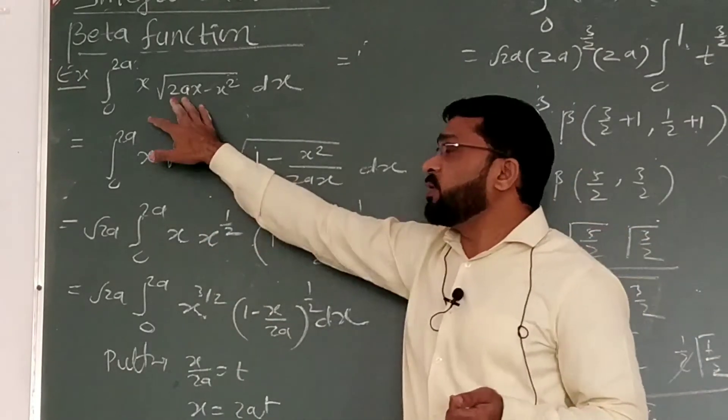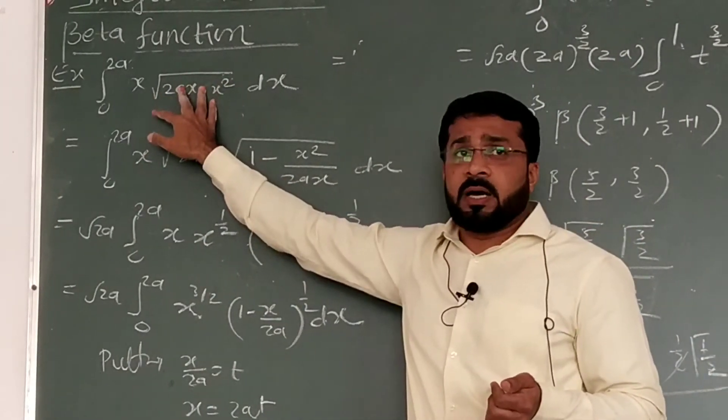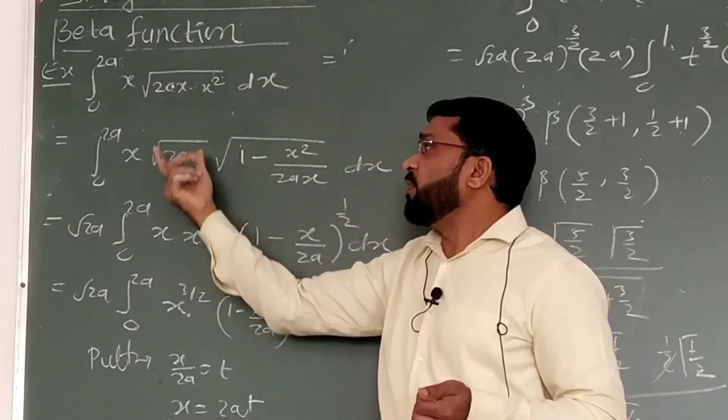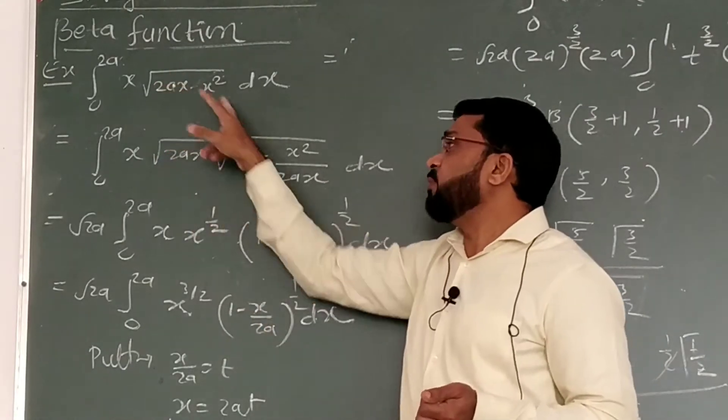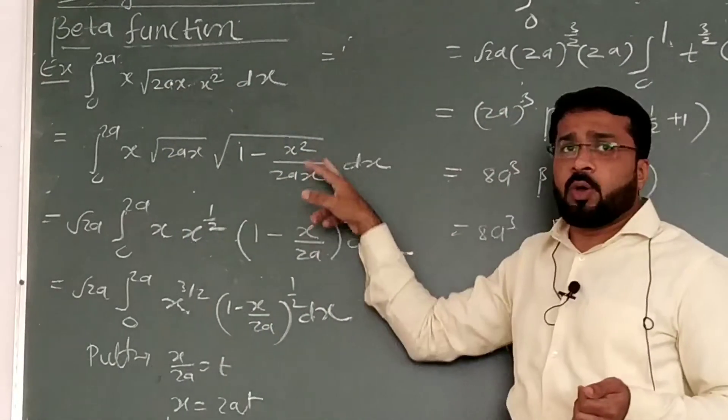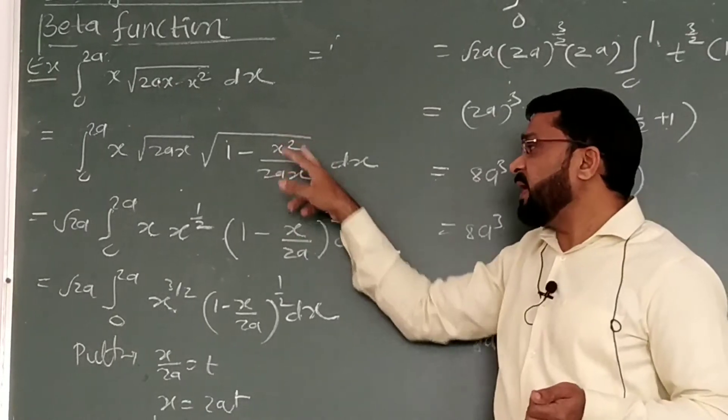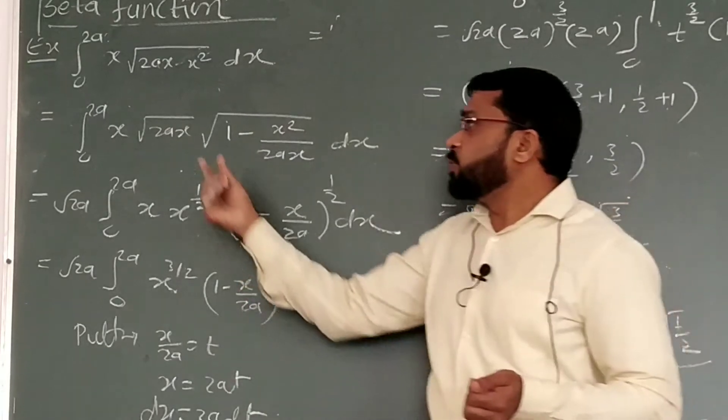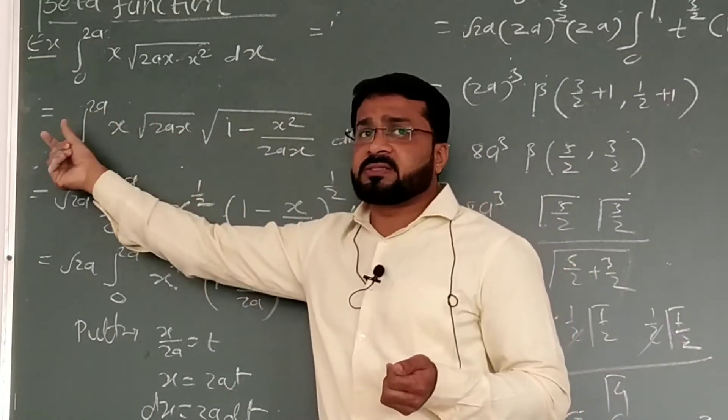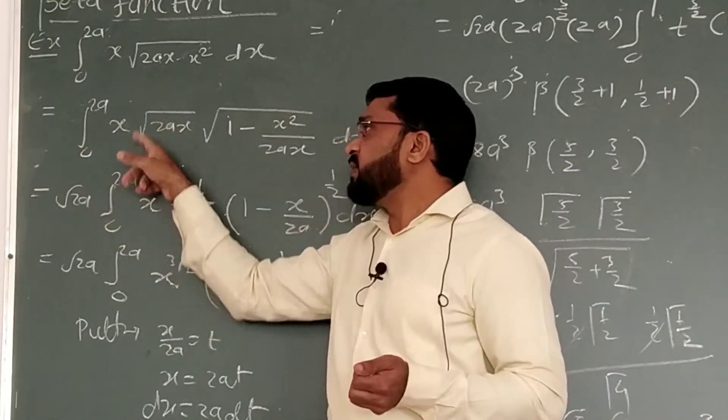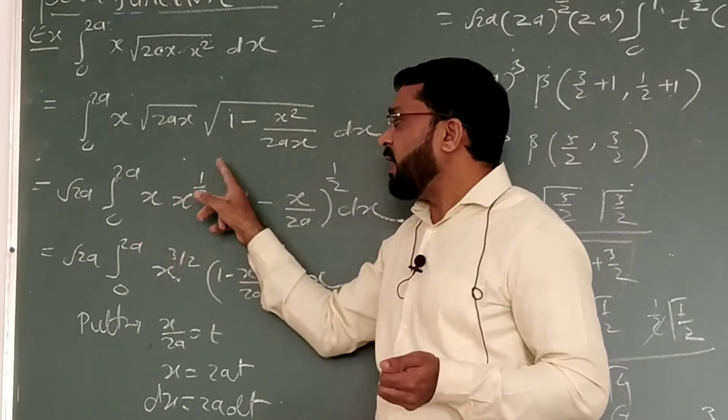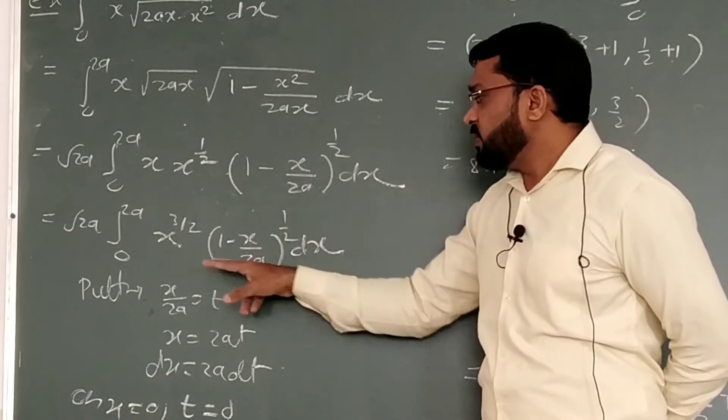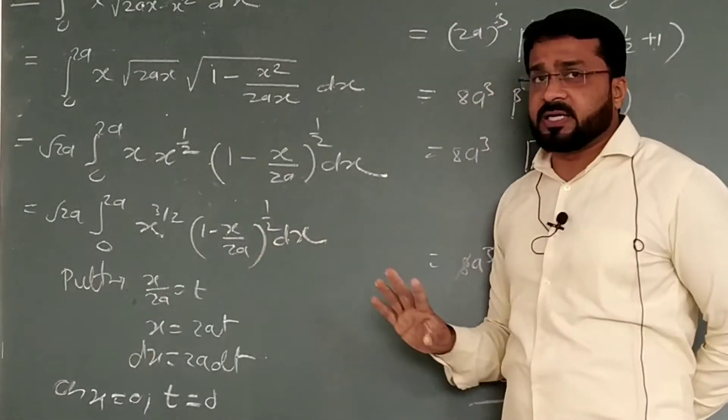So, if we see it, we will remove root 2x from outside. So this will come in the form of 1 minus. I take out the root 2x common. So this will be written as 1 minus x square upon 2x. This gives x to the power half, x to the power 1, that is x to the power 3/2, and with the same term (1 minus x/2a) to the power half and dx.